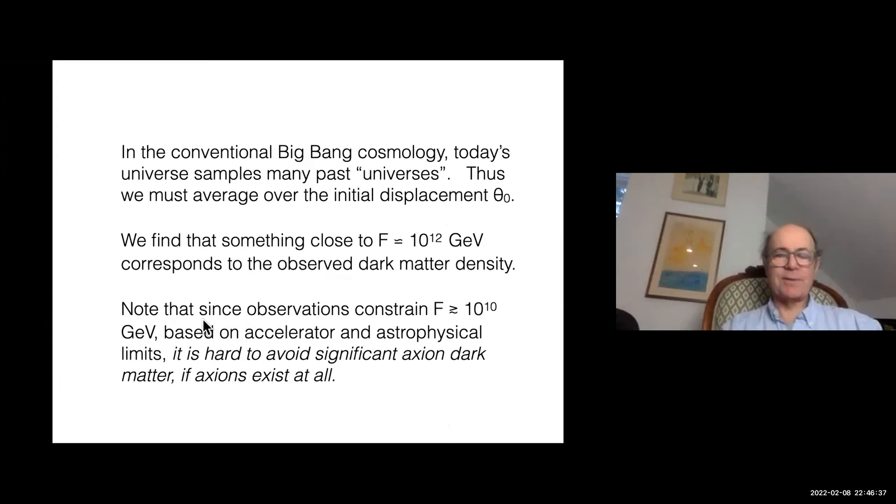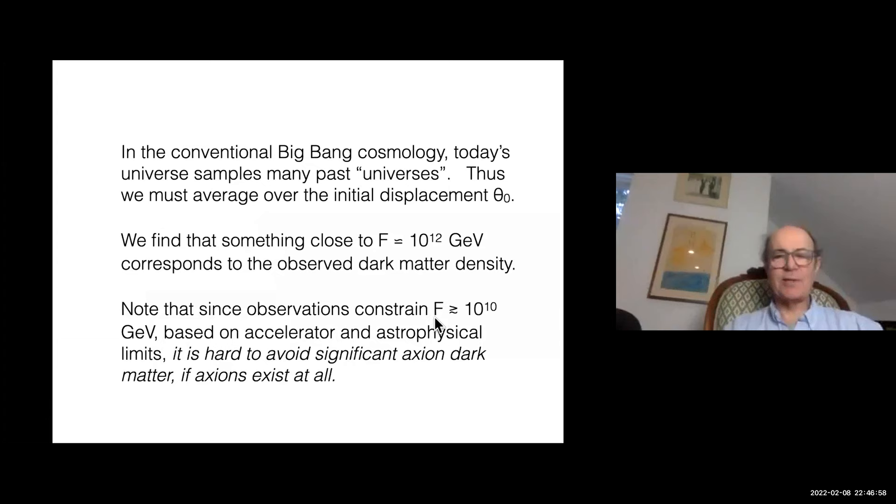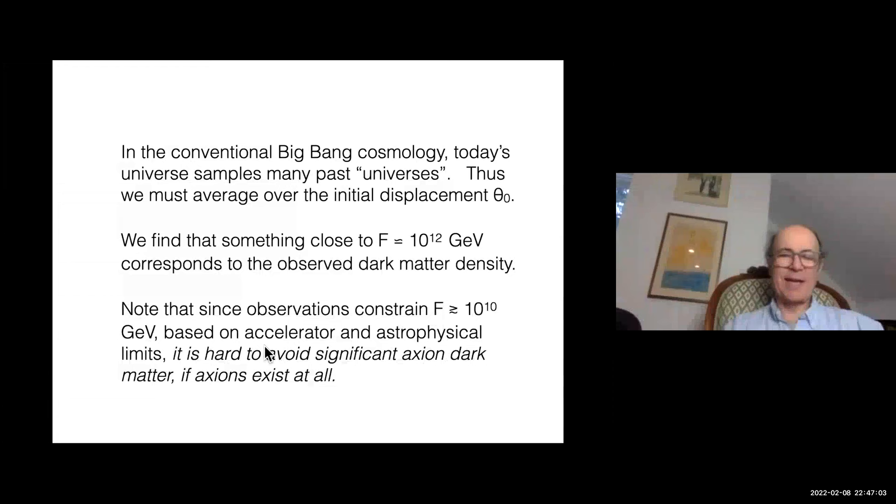There's been tremendous effort put into searching for axions. There are experimental constraints now from astrophysics and accelerator physics that say F has to be greater than 10 to the 10th GeV. Remember, the strength of axion coupling goes down as F increases. So as you get better constraints on the possible coupling, the F parameter that's allowed gets bigger and bigger. Based on existing limits, F is greater than or equal to 10 to the 10th GeV.